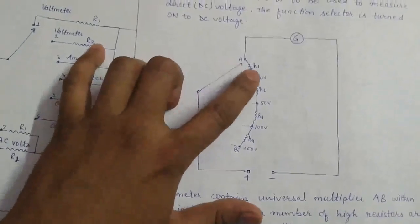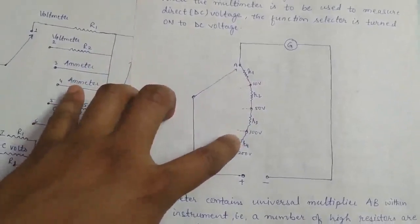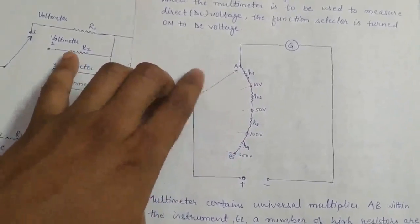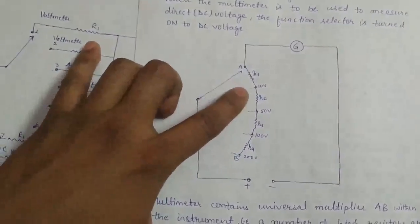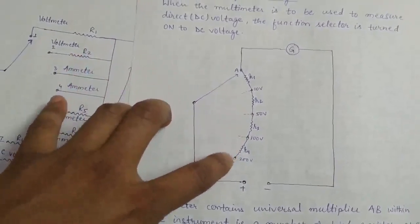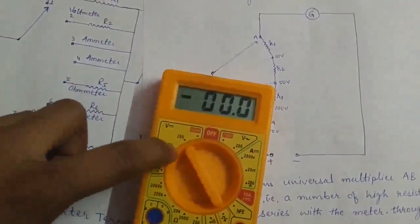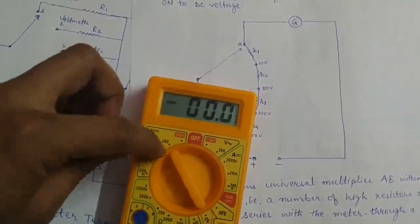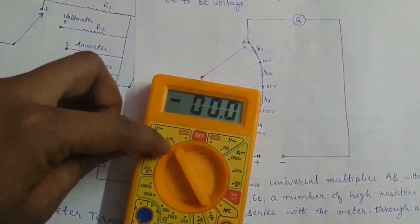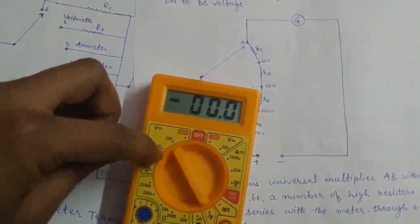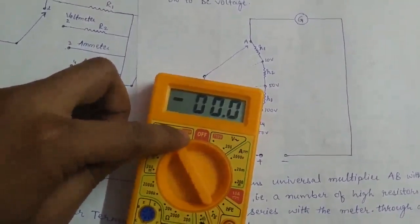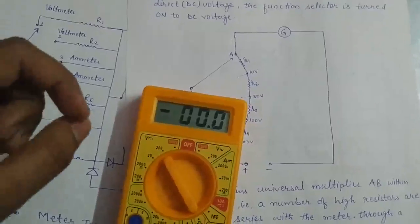These ranges are 10V, 50V, 100V, 200V. These range points have internal resistances R1, R2, R3, R4 connected. This range, for example 20V, connects to this resistance.